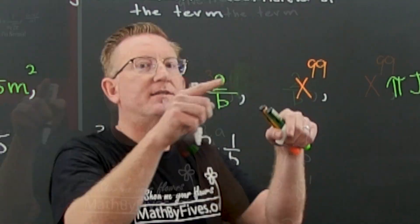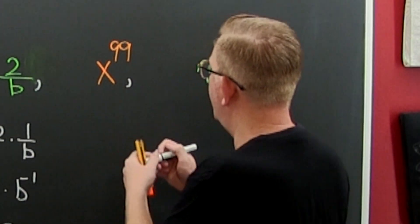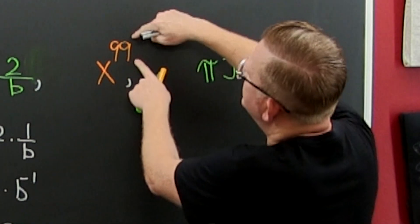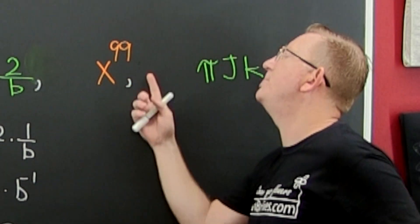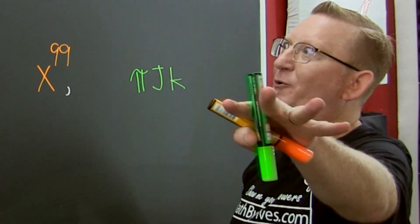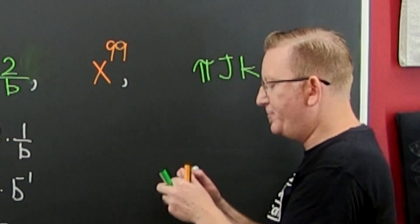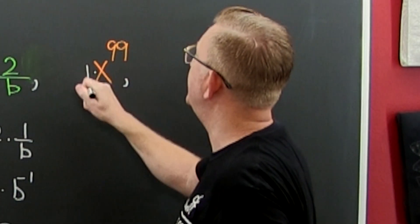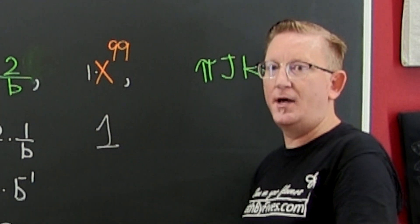I see my exponent's gonna be 99. What is the number that's multiplied by that x? Well, if I don't see anything, it's assumed to be a one. So here my numerical coefficient is a one. But I'm not done, I got one more.